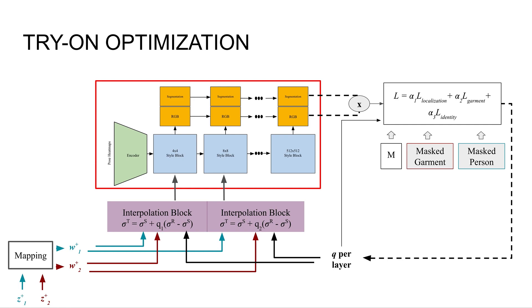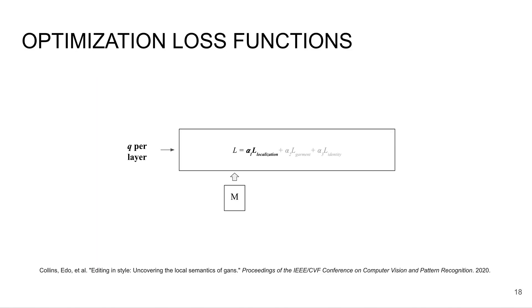We learn these interpolation coefficients through an optimization, and this optimization has three loss functions. The first loss is the localization loss, and this ensures that we're only changing the representation in the region of interest. So for example, we want to change the shirt style, but not the hairstyle.